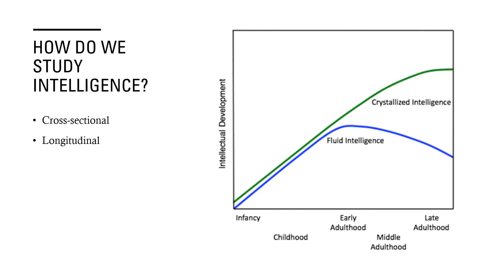Researchers study intelligence through cross-sectional designs and longitudinal designs. Longitudinal designs involve comparing individuals to themselves across different points in time — we may study them at 20, 30, 40, and again at 50. Cross-sectional designs include looking at different people at the same point in time, such as comparing a group of 20-year-olds and a group of 50-year-olds.